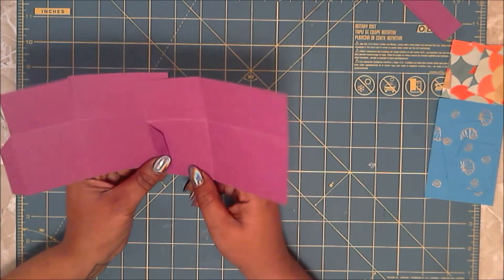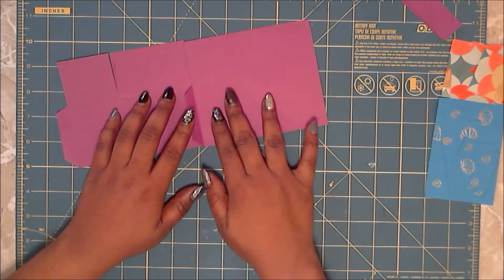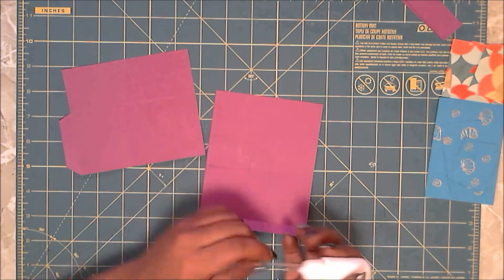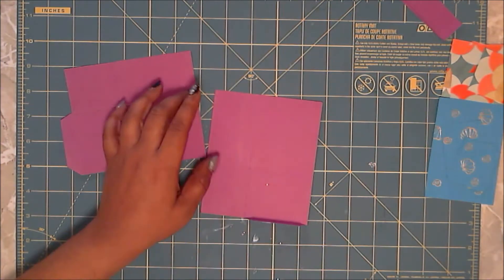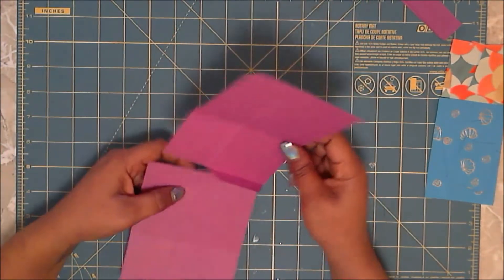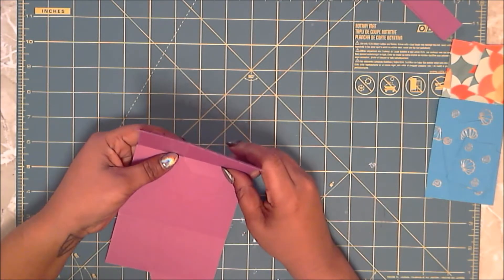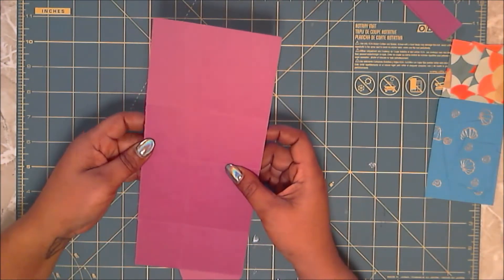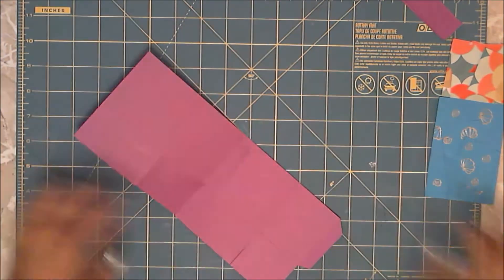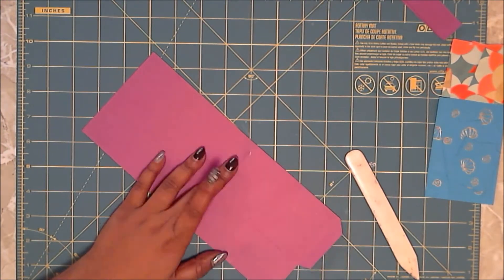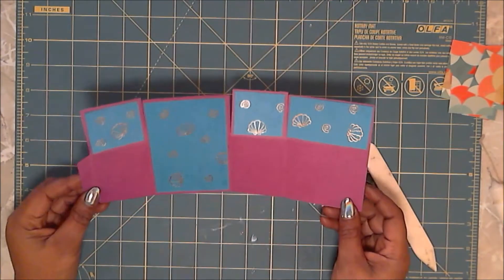Next we are going to glue down our tab on one side to the other side of the box. To save some time, I already went ahead and glued in the inside paper for the box.